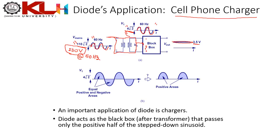The output of the step-down transformer has a peak value of about 4√2 V (RMS ≈ 4 V). The actual output of the black box is a constant 3.5 V DC. Notice that the final output has no negative values at all — there is no negative area in the DC output.